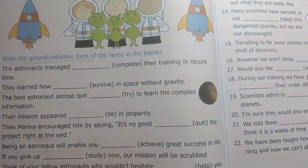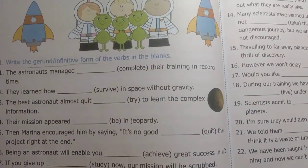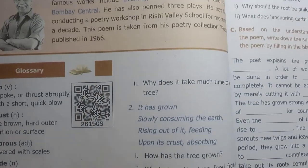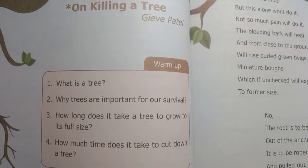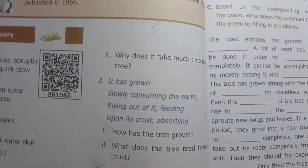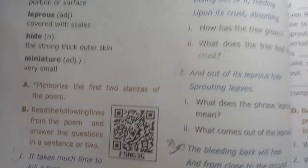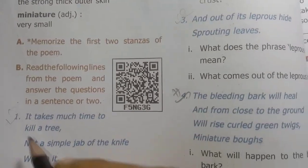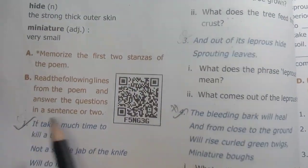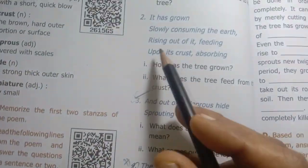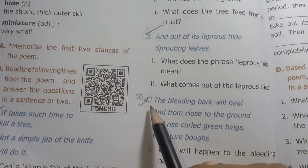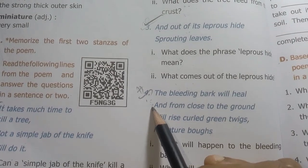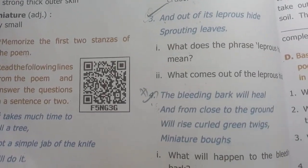Gerund and infinitive. Page number 72 — important. Next: poem: On Killing a Tree. Page number 76 — first one important, third one important, fourth one is a previous year half-yearly question.